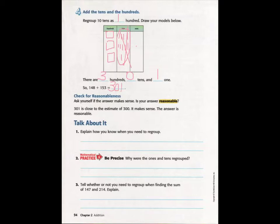Now, we need to check our answer for reasonableness. Ask yourself if the answer makes sense. Is your answer reasonable? Now, boys and girls, I would like you to stop this lesson. Talk to your neighbor about explaining how you know when you need to regroup. Talk to your neighbor also about why were the 1's and 10's regrouped.